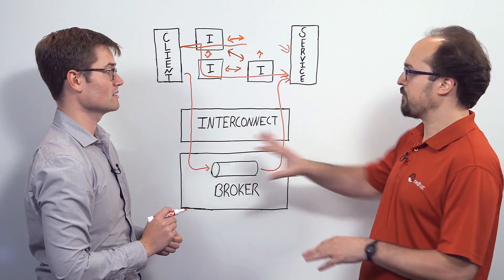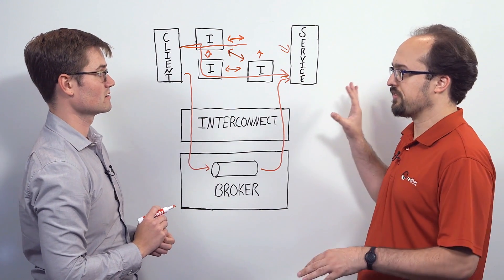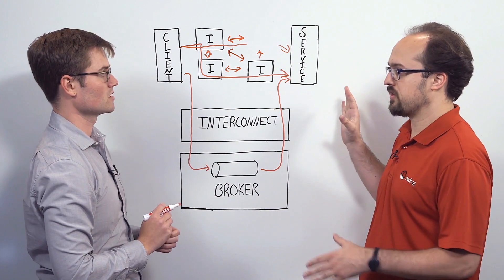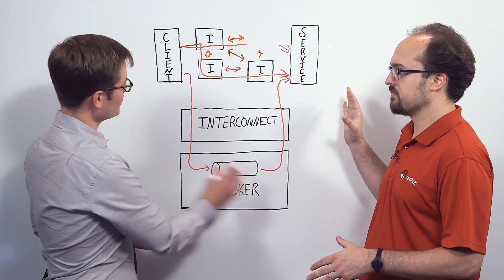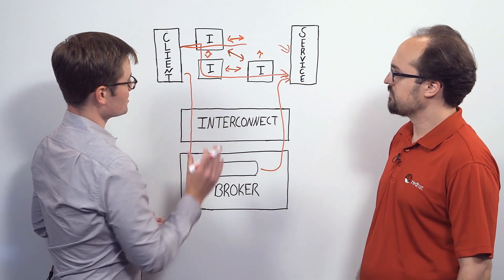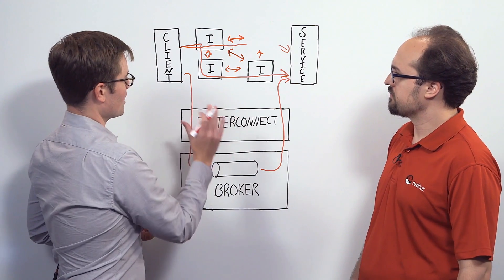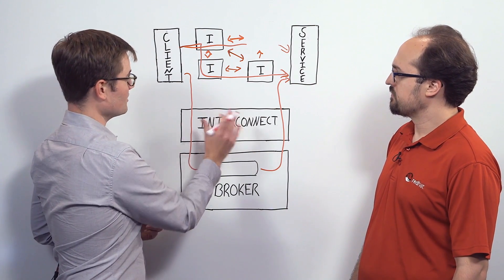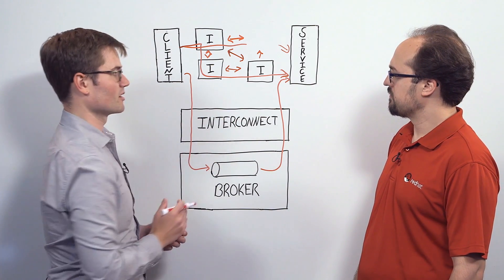When you say transparent, does that mean the client and service didn't have to change at all? They don't need to know that this broker is here — the change is all in the interconnect layer.